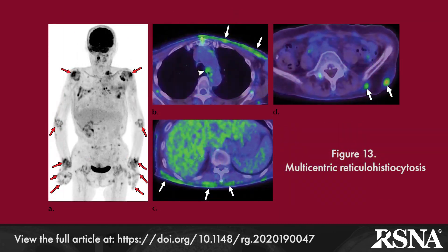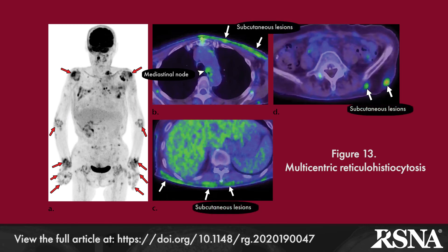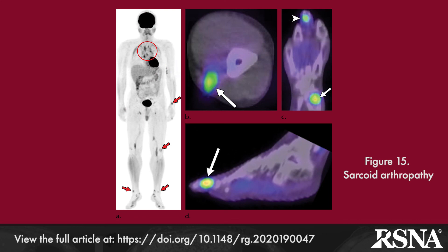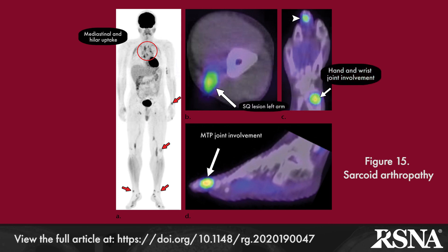Multicentric reticulohistiocytosis presents as polyarthralgia with papulonodular skin lesions in males. Symmetric FDG uptake in joints, especially in the DIPs, is in distinction to rheumatoid arthritis, which tends to involve the metacarpophalangeal joints. Arthropathy associated with amyloidosis can be recognized on CT and PET-CT by the shoulder pad sign. Sarcoid arthropathy in its chronic form occurs in the context of extrapulmonary manifestations of sarcoidosis, particularly skin involvement, with typical mediastinal and hilar nodal involvement along with joint, bone, and muscular uptake of FDG.